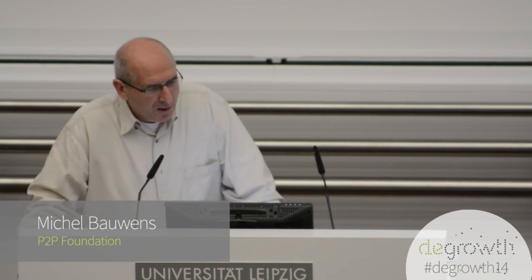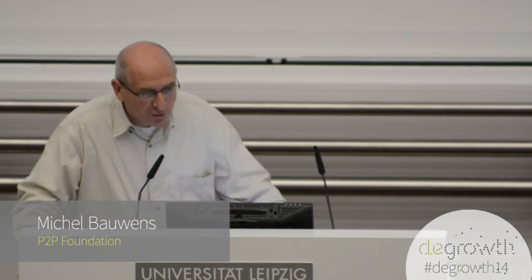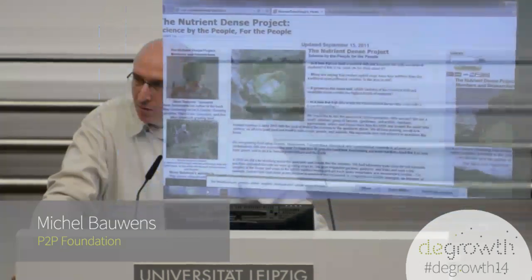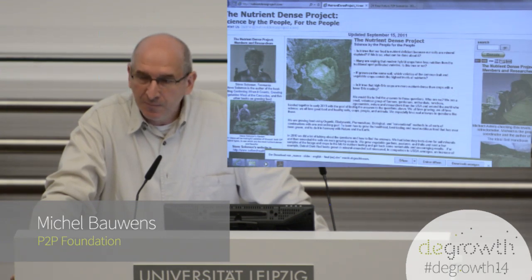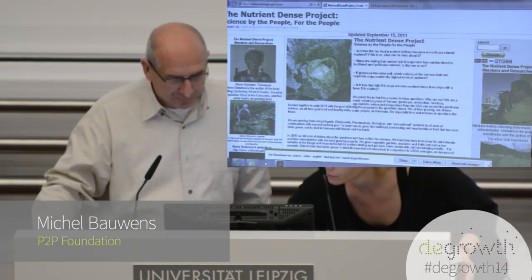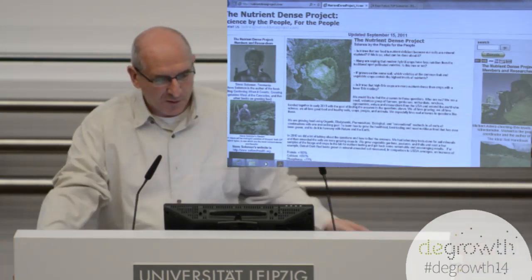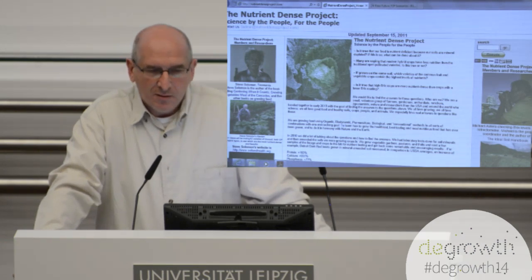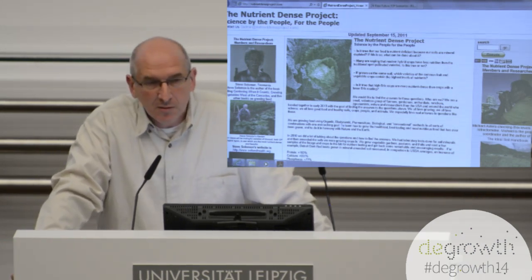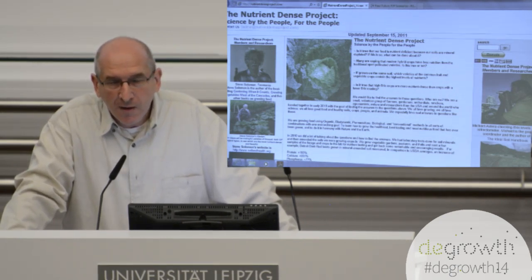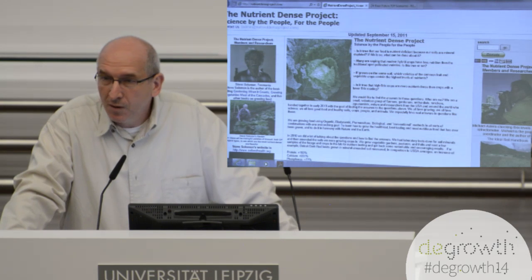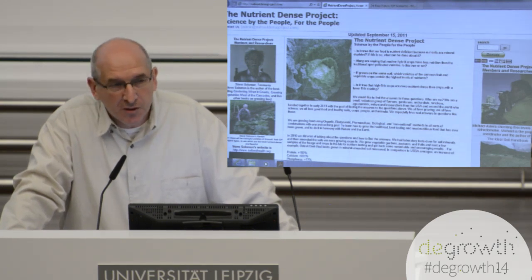As an example, I took the Nutrient Dense Project to talk about it and show you some characteristics of what we call commons-based peer production and why this is an important factor in degrowth strategies. This is a global community of farmers, citizen scientists, and academic agricultural engineers who have the idea that if you put good nutrients in the soil, you get better food — in other words, the opposite of toxic industrial agriculture.